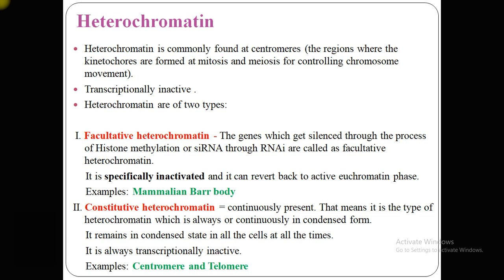Constitutive heterochromatin, as the name suggests, is continuously present in the chromosome. It is the type of heterochromatin which is always in condensed form — it remains in the condensed state in all cells at all times, and is always transcriptionally inactive. Examples of this kind of heterochromatin are the centromere and telomere regions of the chromosome.